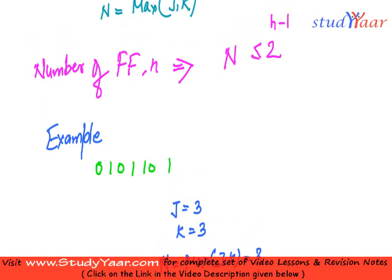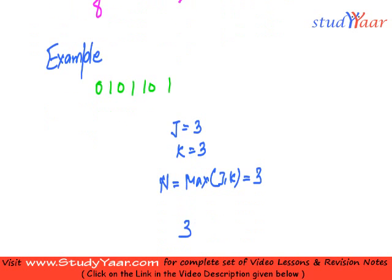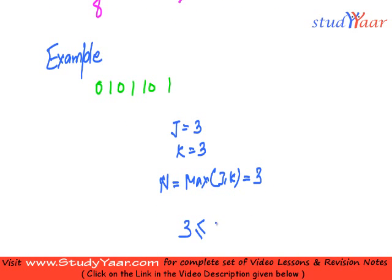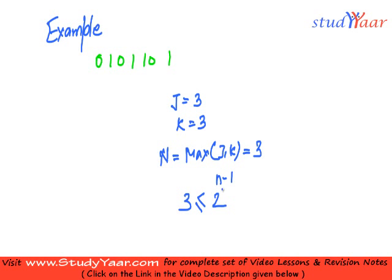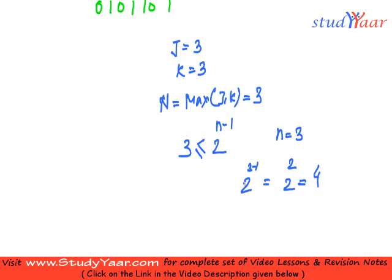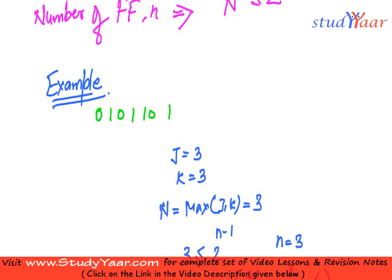So what is your equation now? Your equation is 3 less than equal to 2 raised to n minus 1. So what n you can have over here? You can have n equal to 3. For n equal to 3, you would have 2 raised to 3 minus 1, which is 2 raised to 2, which is 4. And 3 is less than equal to 4. So your n is equal to 3. Number of flip-flops.